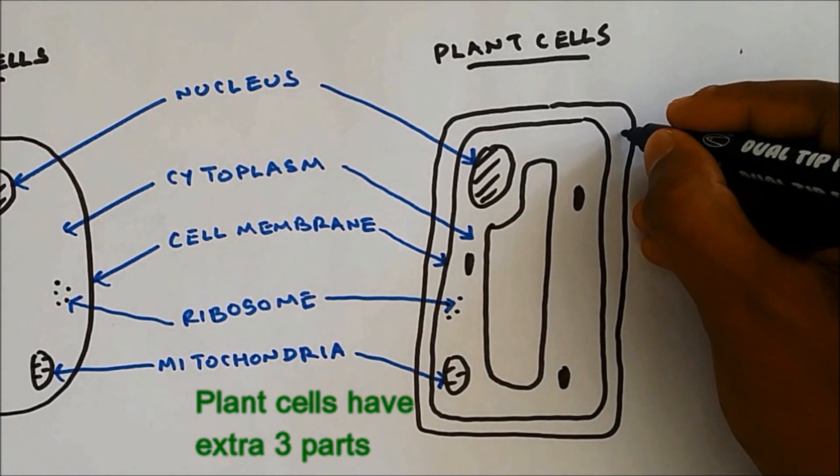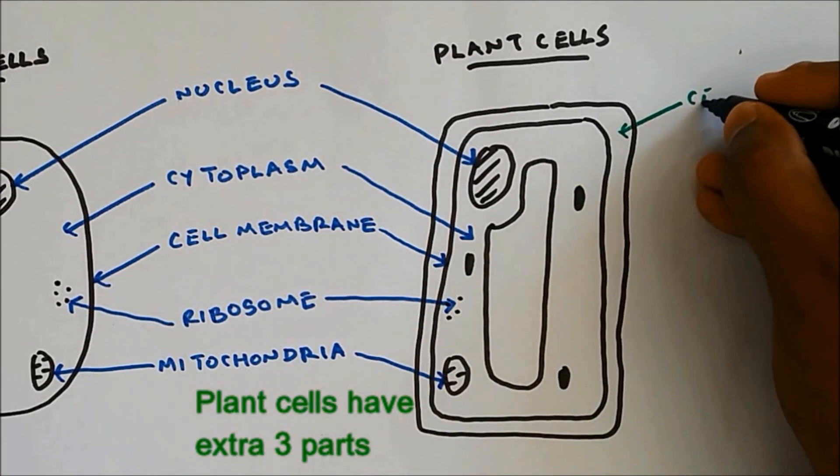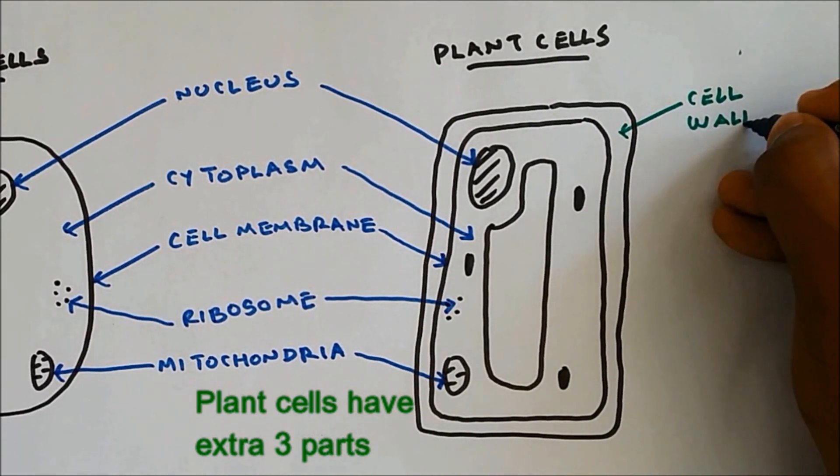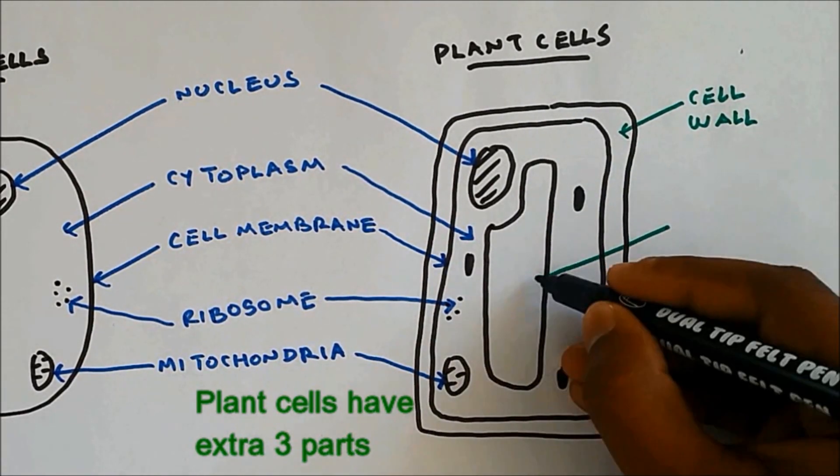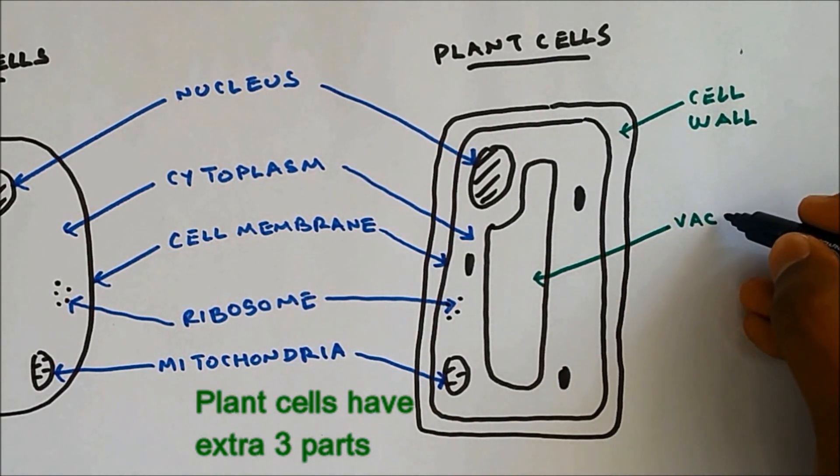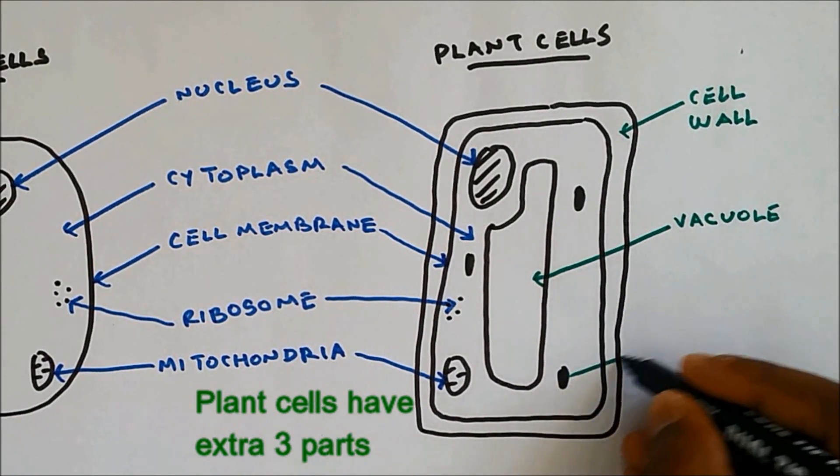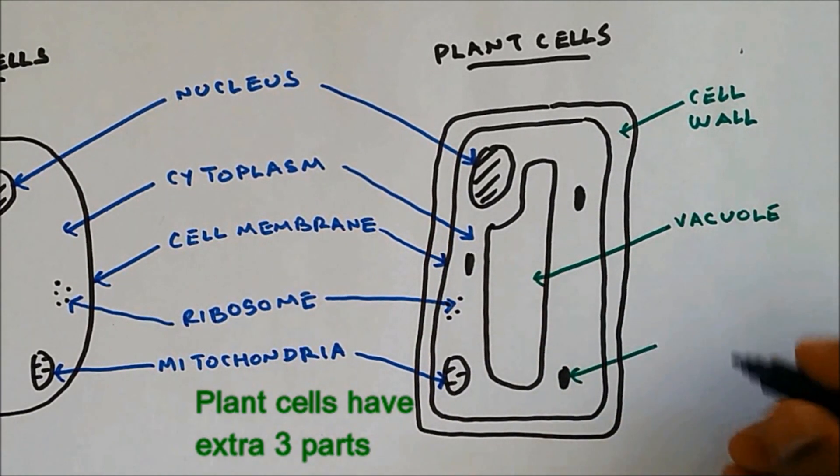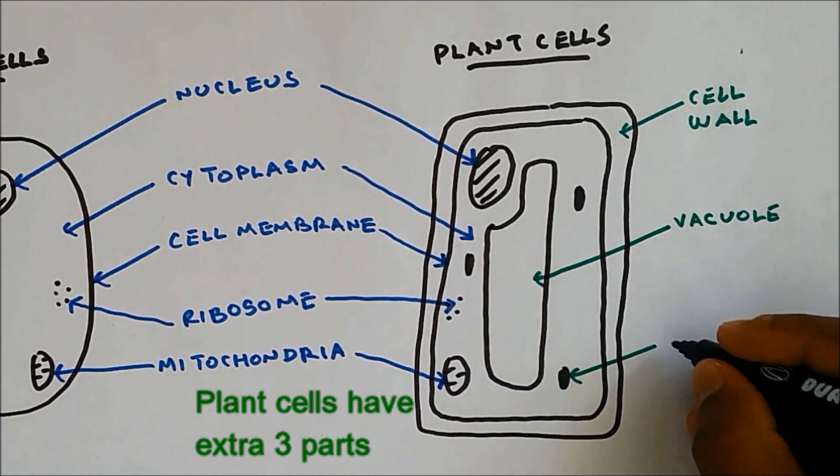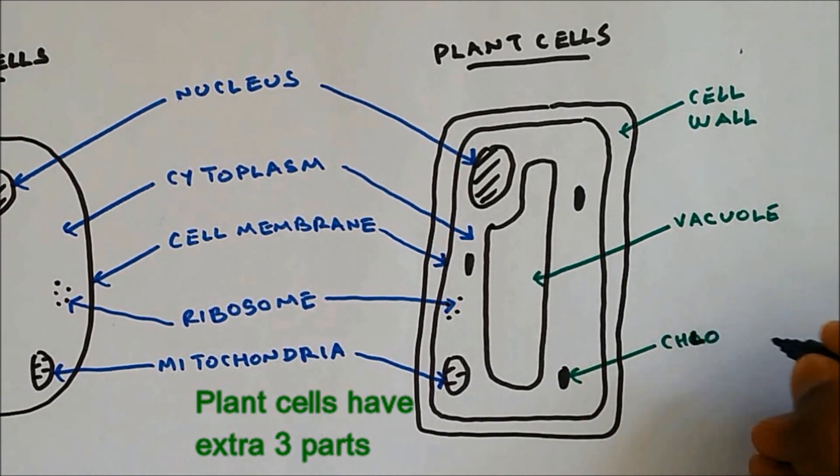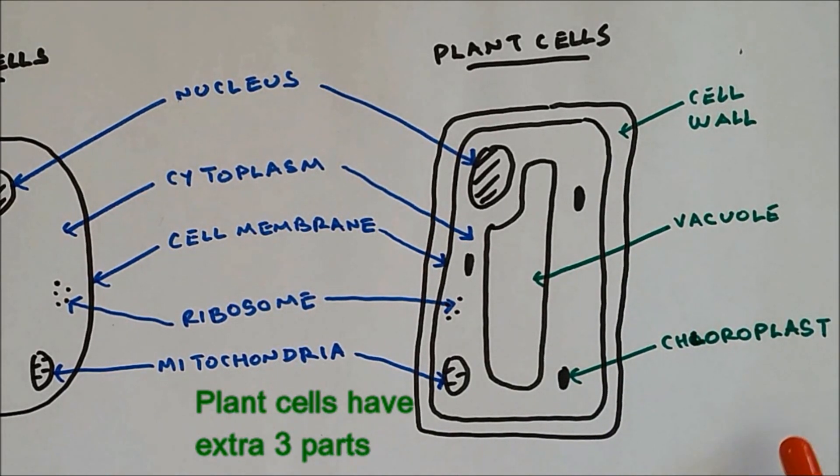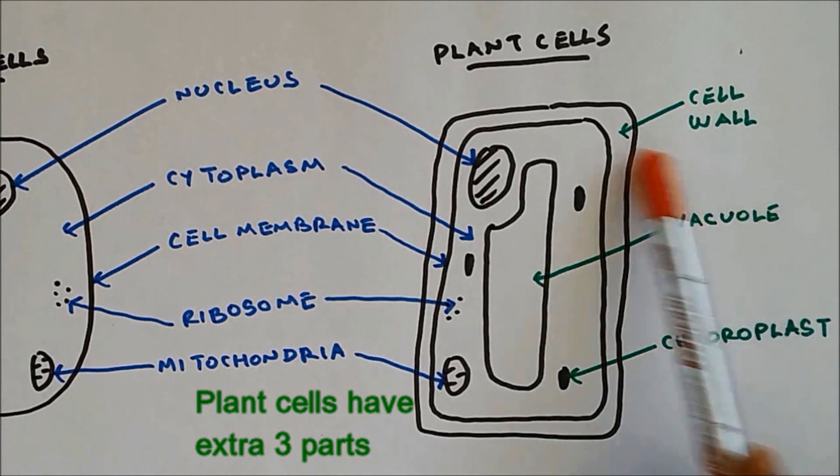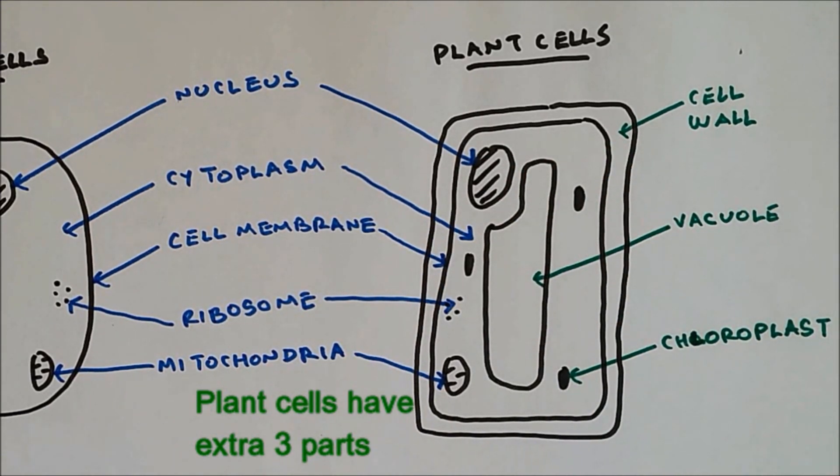I already mentioned cell wall which is the outer layer. This is vacuole. And these are green in color because they contain green pigments. So these are chloroplasts. You can see that plant cells have extra three parts compared to animal cells. All together, plant cells have eight parts and animal cells have five parts.